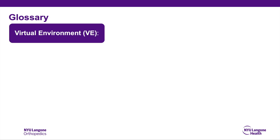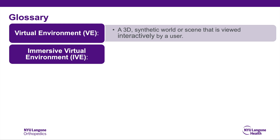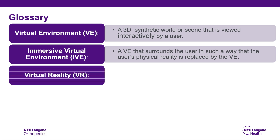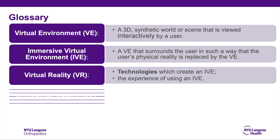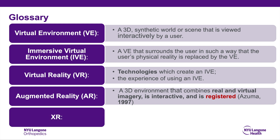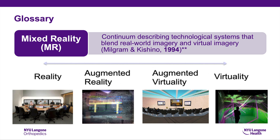What is XR? A virtual environment is a 3D synthetic world that's viewed interactively by a user. An immersive virtual environment is the VE that surrounds the user so that you replace your physical reality with this new thing. Virtual reality are generally technologies which create this immersive virtual environment. Augmented reality is an environment that combines real and virtual imagery, which is interacted and registered, and this has been around since 1997.